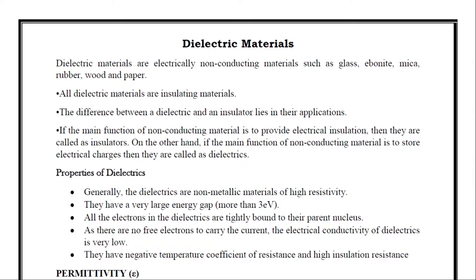All the electrons in dielectrics are tightly bound to their parent nucleus — that means electrons are confined to their constituent atoms. As there are no free electrons to carry the current, the electrical conductivity of dielectrics is very low. Since electrons are bound to their constituent atom, there are no free electrons to carry current inside the dielectric material, and therefore the electrical conductivity is very low.